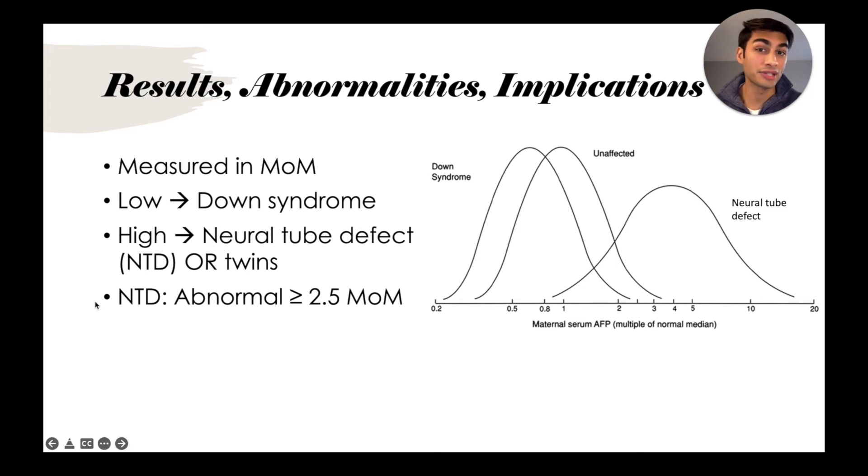So what are the abnormal levels that we're talking about? For a neural tube defect, abnormal is defined as greater than or equal to 2.5 multiples of the median. Here on the right, this graph is demonstrating this. Here is one multiple of the median, and if the measurement of MSAFP is low, we see it can indicate Down syndrome. However, if it's high—above 2.5—that can indicate a neural tube defect.